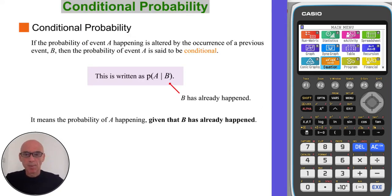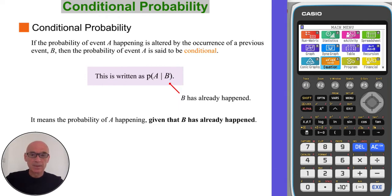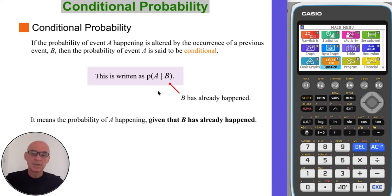If the probability of event A happening is altered by the occurrence of a previous event B, then the probability of event A is said to be conditional. It's written as shown here, and this notation means the probability of event A happening given that event B has already happened.